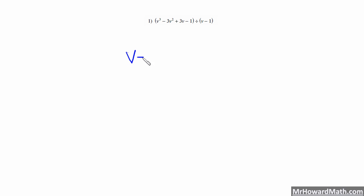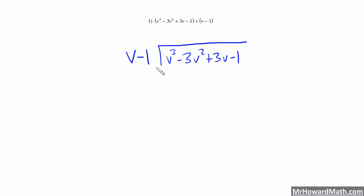So we have v minus 1, and we're going to divide v cubed minus 3v squared plus 3v minus 1. This is the same way that you've always done division. You've also done this in Algebra 2, so this will just be a review. So we need to get to v cubed, and our first term is v. We're looking for what times v equals v cubed, and that would be v squared. So we write v squared, and now we multiply v squared times v and we get v cubed.